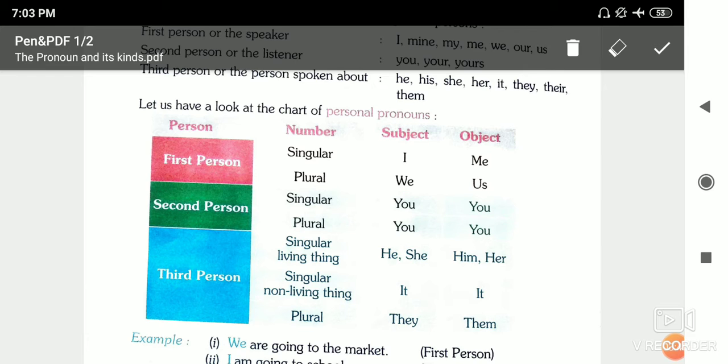Third person - if it's a singular person who is a living thing, we use 'he' or 'she'. For masculine gender we use 'he', and for feminine we use 'she'.